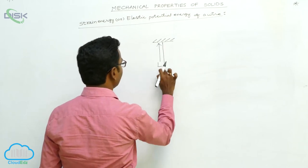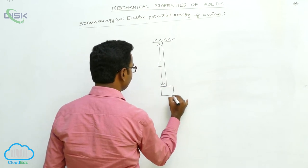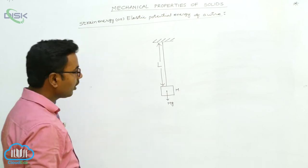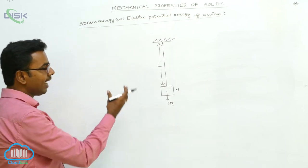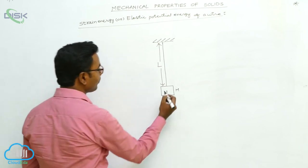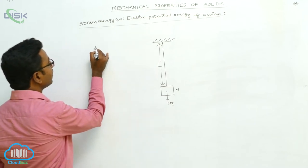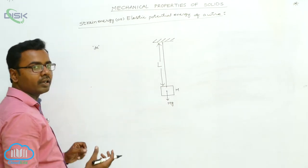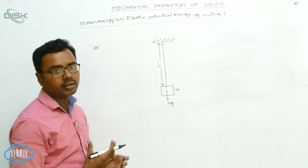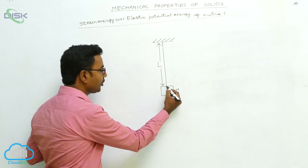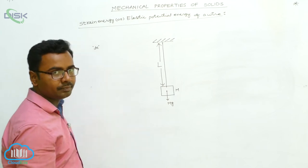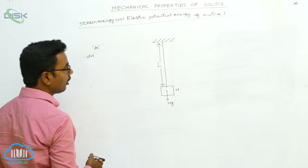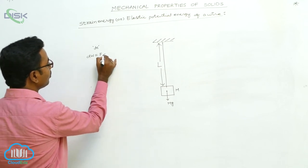It is a wire of length capital L. We attach a load of mass capital M, so the weight mg acts vertically downward. The force acting on the wire is mg. We suppose that initially a small elongation DE is produced in the wire. To produce this small elongation, the applied force has to do a small amount of work.